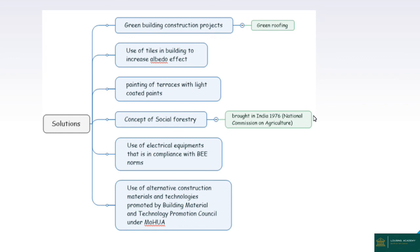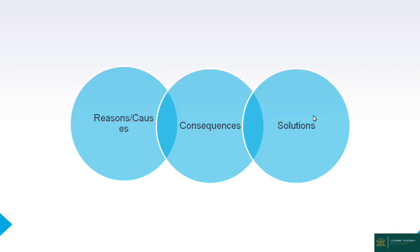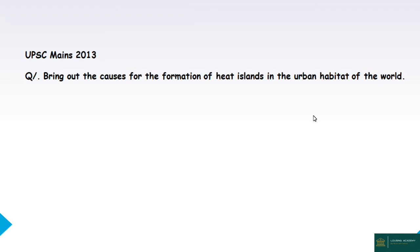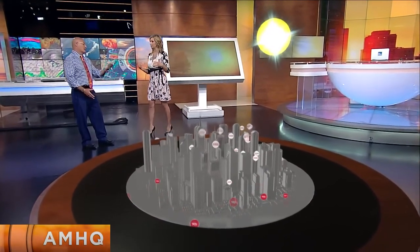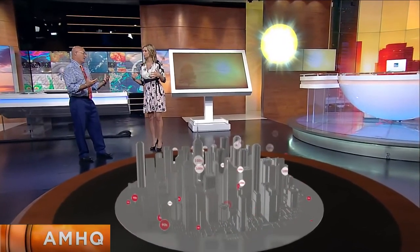From an ethical dimension, being environmentally conscious is important, as reflected in India's Constitution fundamental duties from an environmental perspective. This covers the urban heat island effect — the concept, regions, causes, consequences, and solutions. This topic can appear in exams — for example, a question asking to bring out the causes for the formation of heat islands in the urban habitat of the world. The UHI profile diagram, five causes, and consequences are all examinable for 5-mark or 100-word answers.